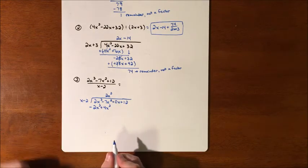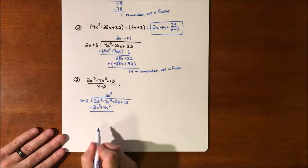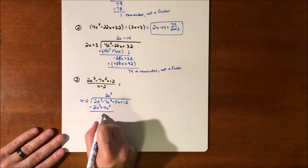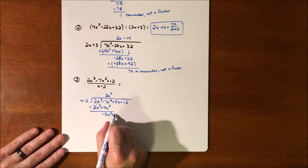We're going to subtract both of those terms, which basically means we're going to change their signs. Those go away as they should every time. This becomes a negative 3x². And we bring down the next term.